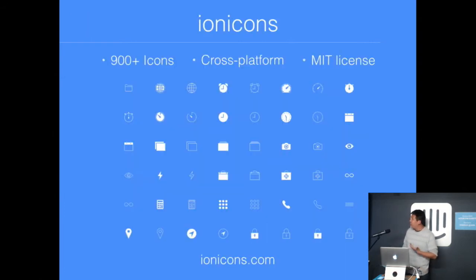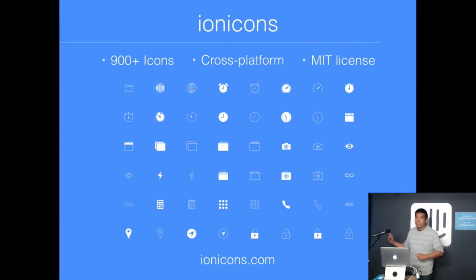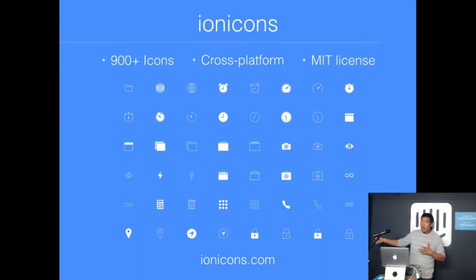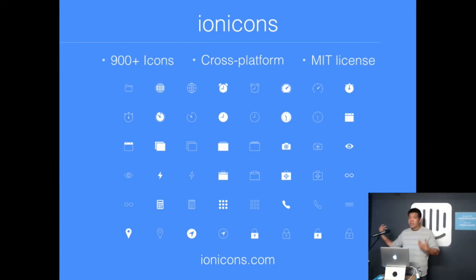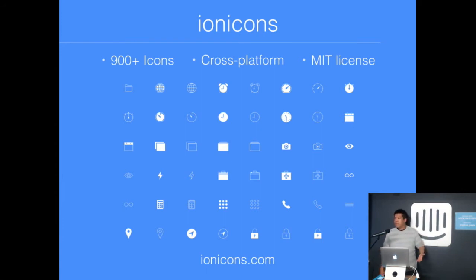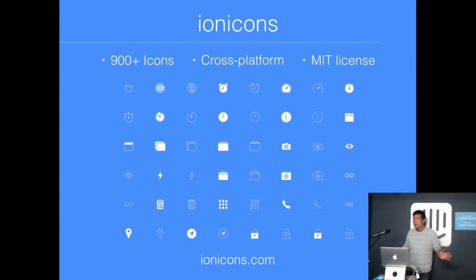We also have another open source project called Ionicons — almost 1,000 icons, open source under the MIT license. Almost all of these were hand designed by our co-founder Ben. You'll notice that a lot of them come in sets, because all the icons are also styled cross-platform — you have Windows Universal, material design, and iOS flavors of everything. Also open source under the MIT license, 100% free to use.